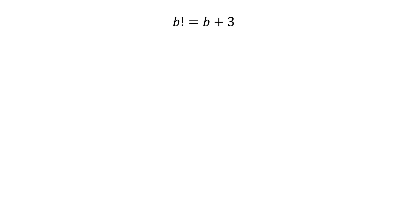Now if b factorial equals b plus 3, we have to test which number will satisfy this. 0 factorial is 1, which is not 0 plus 3. 1 factorial is 1, which is not 1 plus 3. 2 factorial is 2, which is not 2 plus 3. But 3 factorial is 6, which is 3 plus 3. This means b equals 3.